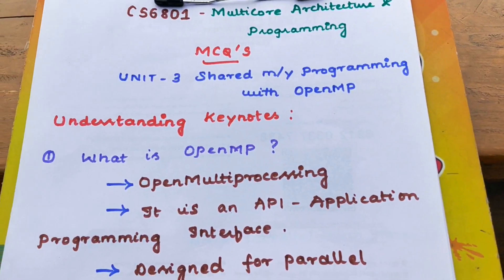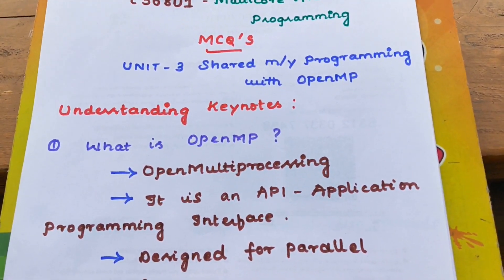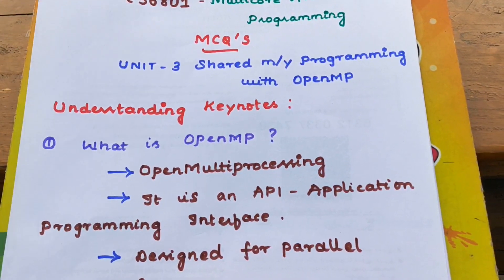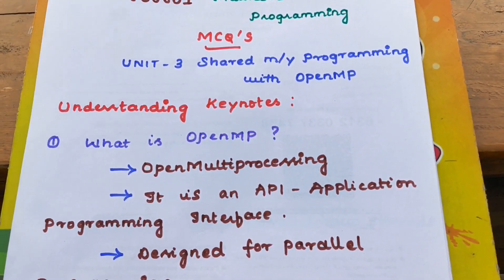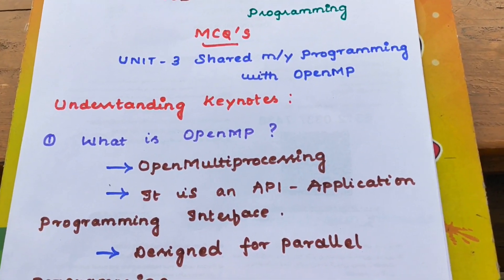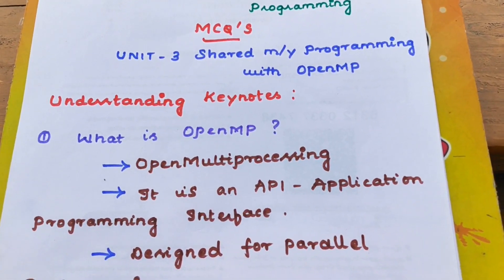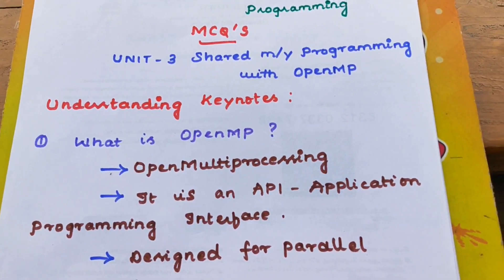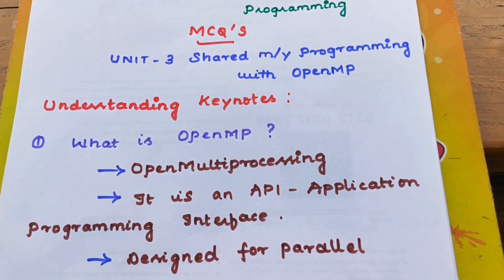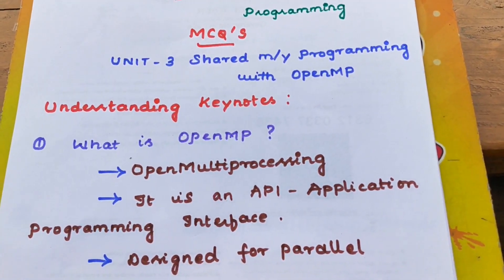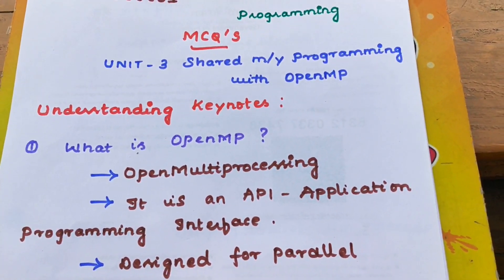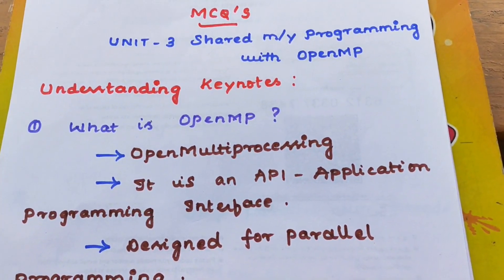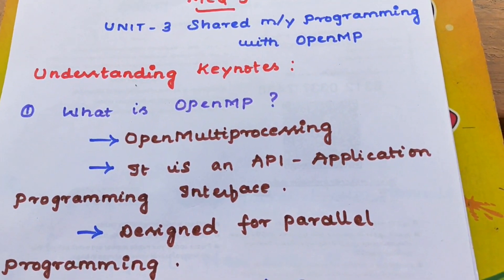First, what is OpenMP? OpenMP stands for Open Multi-Processing. It is an API, that means application programming interface. The main objective of OpenMP is parallel programming — that means executing tasks in parallel.